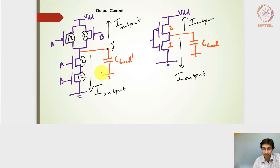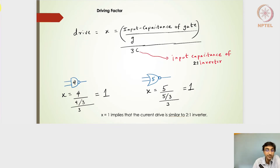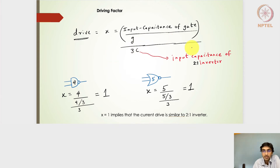We have also sized it 2 and 2 so that in the worst case, if one transistor is on, the rising current at the output should be similar to the rising current of the 2-to-1 inverter. So we size the gates 2 and 2 on both sides to get output current — the capacitor being charged or discharged — equal to that of the 2-to-1 inverter. With this understanding, let's redefine the driving factor: the ratio of the input capacitance of the gate divided by the logical effort, all divided by the input capacitance of the 2-to-1 benchmark inverter.